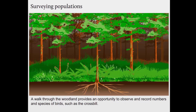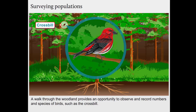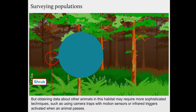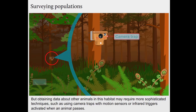A walk through the woodland provides an opportunity to observe and record numbers and species of birds, such as the crossbill. But obtaining data about other animals in this habitat may require more sophisticated techniques, such as using camera traps with motion sensors or infrared triggers, activated when an animal passes.